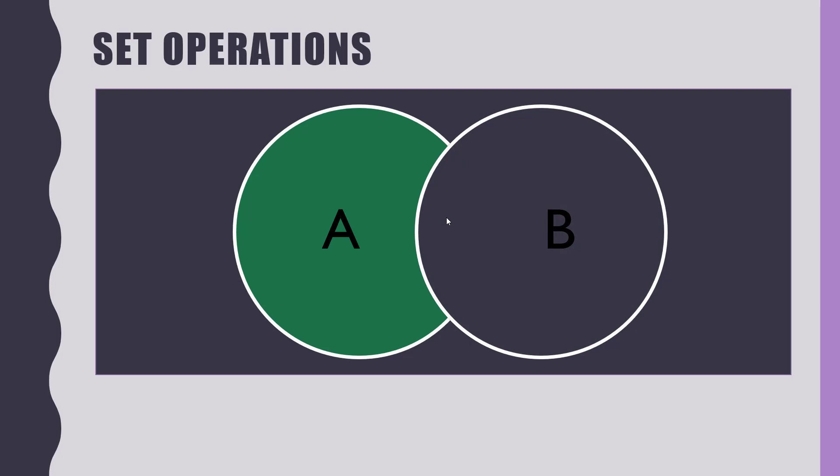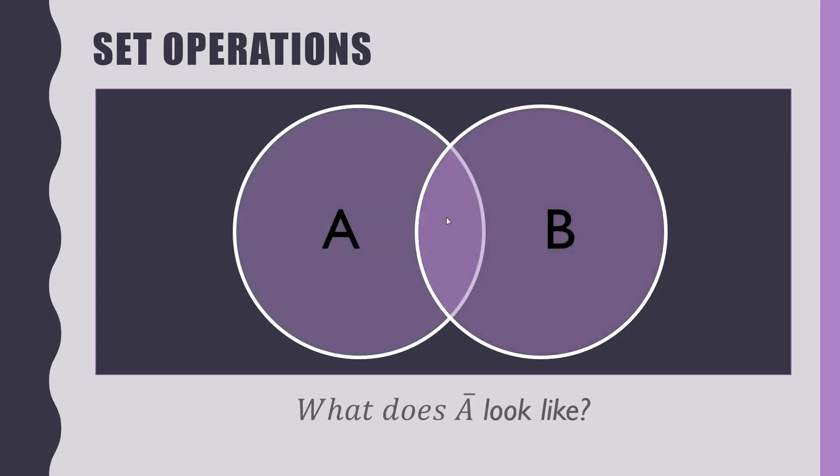What do we call that middle section there? Something that's in A and in B, that's the intersection. What do we call this bite out of a cookie-looking thing? That is A minus B. That was harder to do than you would think in a PowerPoint to make that. The definition of that is everything that's in A that's not in B. I want stuff in A, not in B, and that is the minus operation.